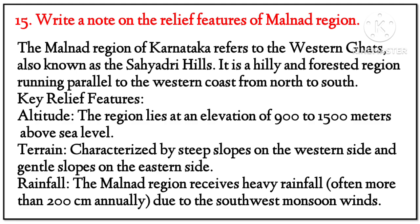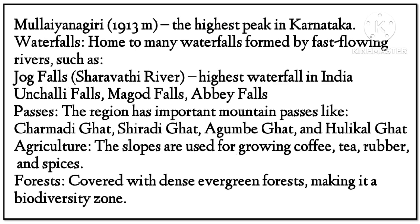Question 15: Write a note on the relief features of Malenadu region. Answer: The Malenadu region of Karnataka refers to the western Ghats, also known as Sahyadri Hills. It is a hilly and forested region running parallel to the western coast from north to south. Key relief features — Altitude: the region lies at an elevation of 900 to 1500 meters above sea level. Terrain: characterized by steep slopes on the western side and gentle slopes on the eastern side. Rainfall: the Malenadu region receives heavy rainfall, often more than 200 centimeters annually, due to the southwest monsoon winds. Mullayyanagiri is the highest peak in Karnataka.